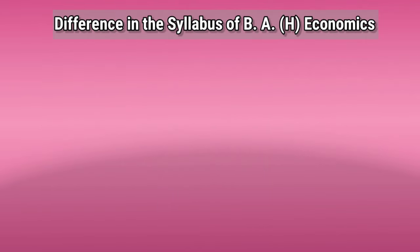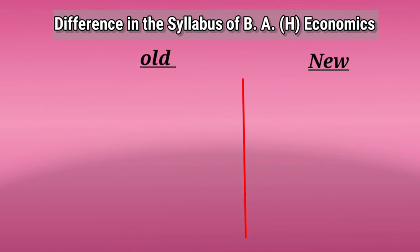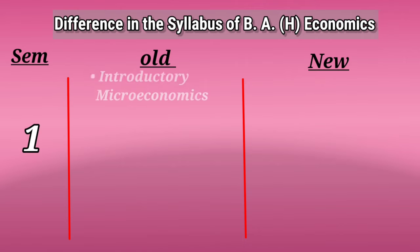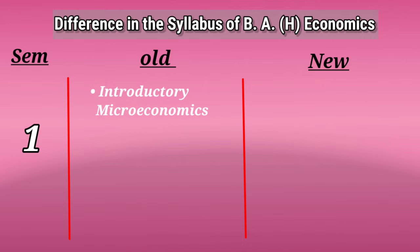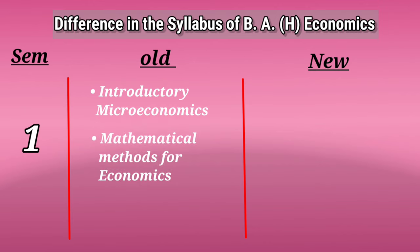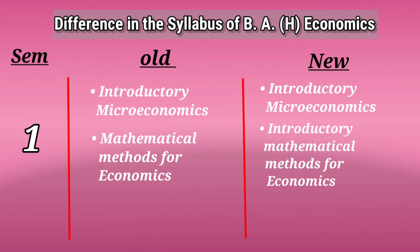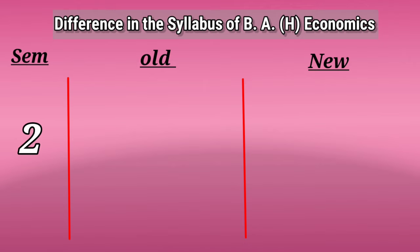In this video we'll see the difference in the syllabus of Economics Honours — we'll compare the previous syllabus with the new one, semester wise. We are only talking about the core subjects for now. In Semester 1, earlier we used to have Introductory Microeconomics and Mathematical Methods for Economics. But now we'll be having Introductory Microeconomics, Introductory Mathematical Methods for Economics, and Introductory Statistics for Economics.